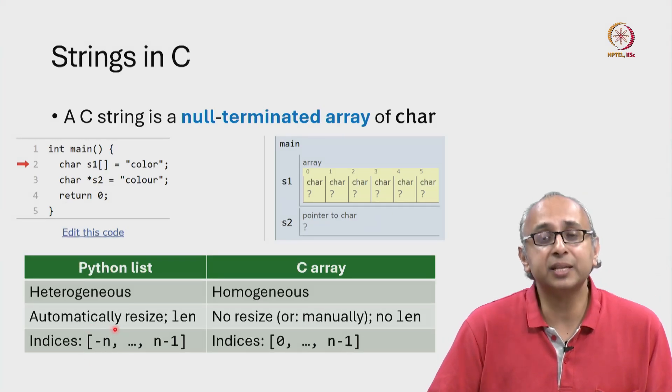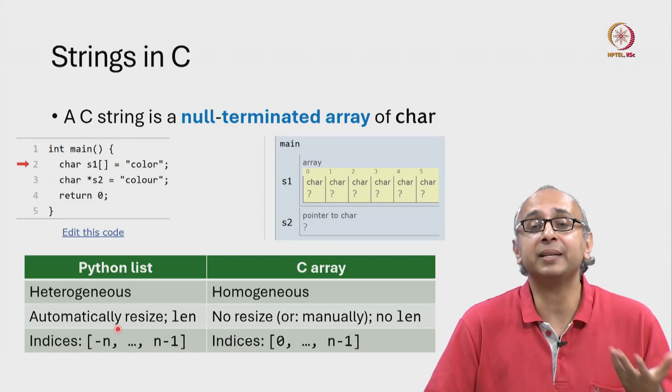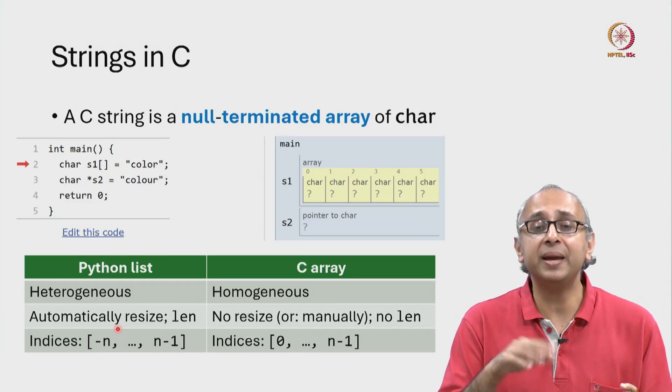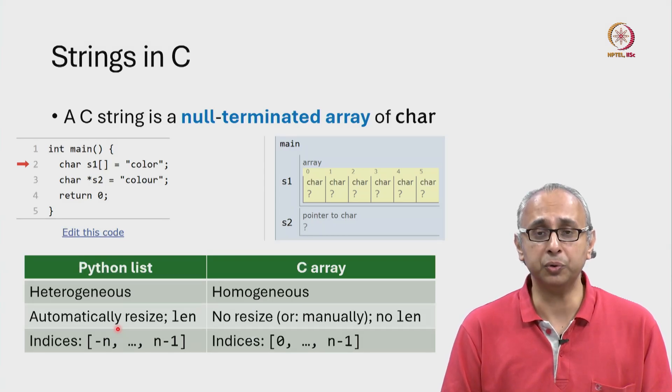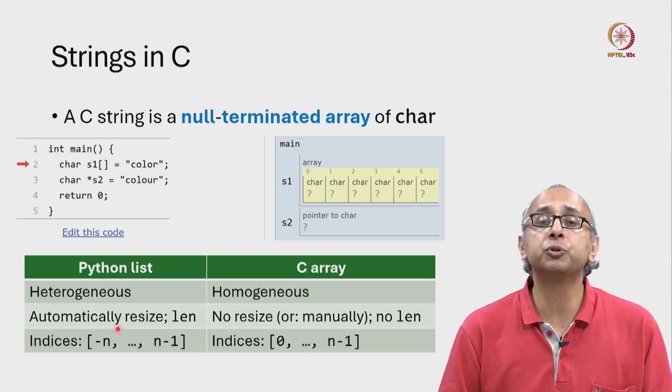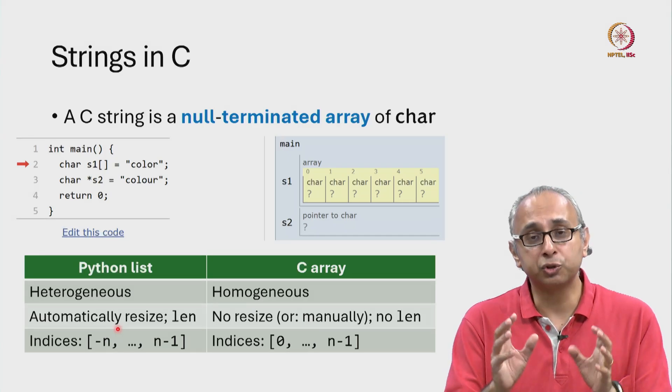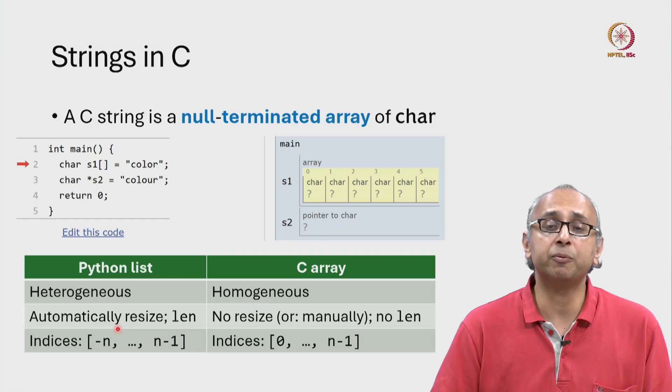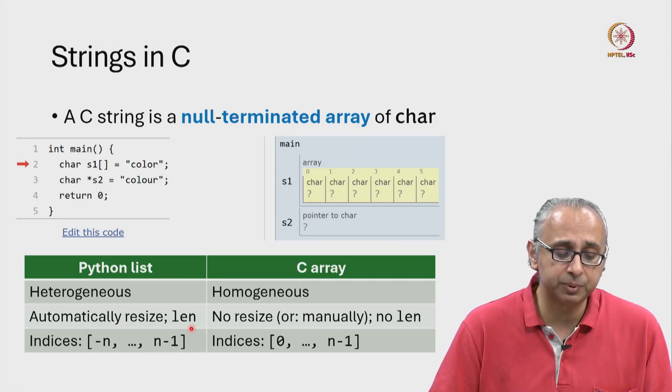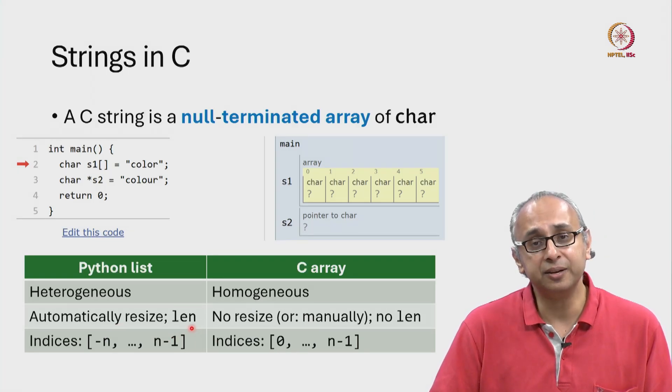Now a Python list as we have seen can be automatically resized. When we append an item to a list, we have seen in Python tutor that the list grows. There are other list methods which I have encouraged you to explore on your own that can shrink the list or grow it by a larger amount. And the length of a Python list is always accessible through the len function.